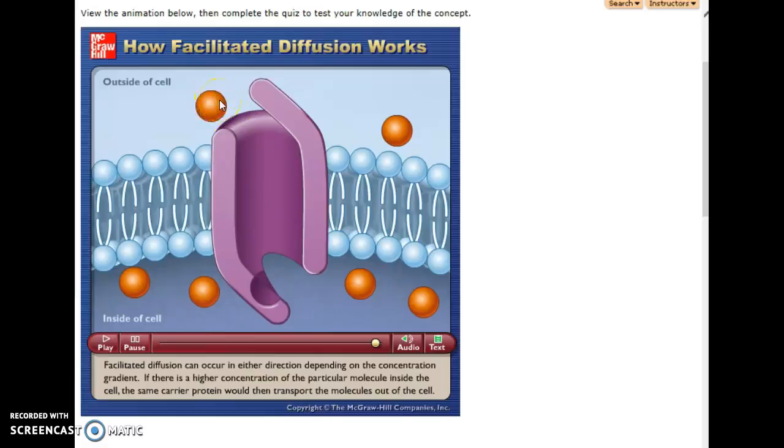Instead of this being glucose, ions, which could be very small in size, one atom in size, they have a charge. So examples might include chlorine. Chlorine as an ion is Cl with a negative charge. Then there are other examples such as sodium. Sodium has a positive charge when it's an ion and potassium has a positive charge. These things have charges, so therefore they are polar. They cannot get through the membrane.